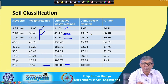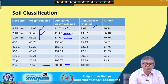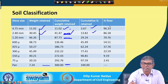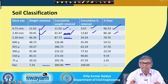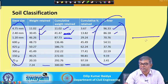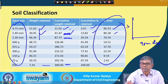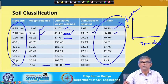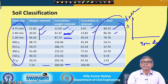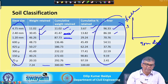Out of 500 grams, the cumulative amount retained gives the cumulative percent. After getting cumulative percent retained, the percent finer is 100 minus that value. From that data, we plot grain diameter on the x-axis and percent finer on the y-axis, join those points to get the grain size distribution graph. From this we can find out whether the soil is fine, coarse, or medium-grained.